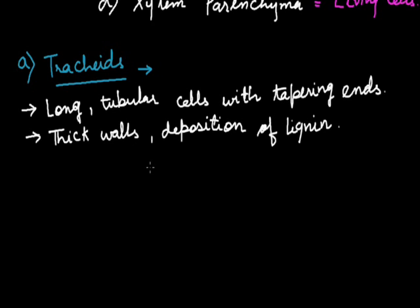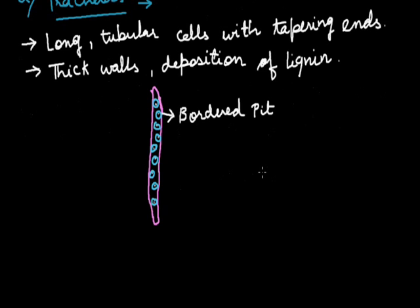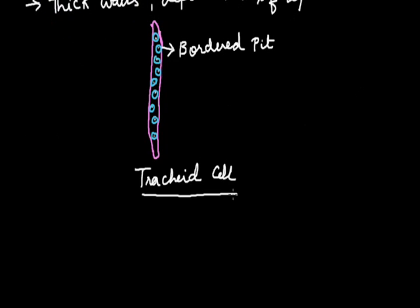Diagrammatically they can be represented as these are all the border pits that are present on the walls of the tracheids elements or the tracheids cells. These bordered pits basically provide the connectivity between the different tracheids cells. These are the border pits. So this is the diagram of a single tracheids cell.